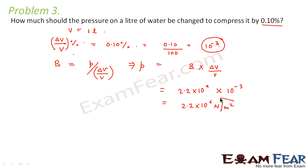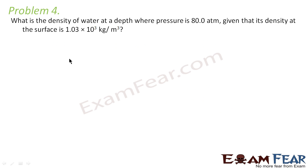Now let us look at the fourth and last problem. It says: what is the density of water at a depth where pressure is 80 atmospheres, given that its density at the surface is 1.03 × 10³ kg per meter cube? So we have to calculate the density of water at a certain depth, given the density at the surface.